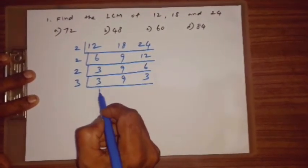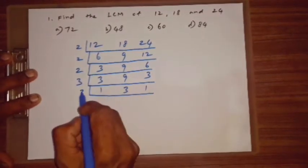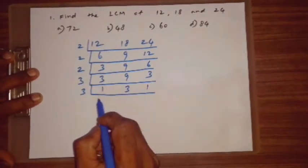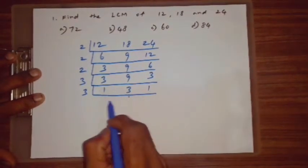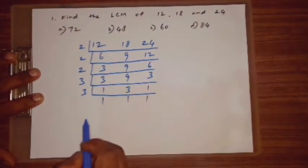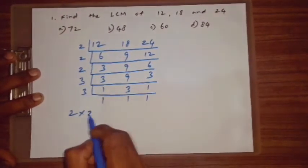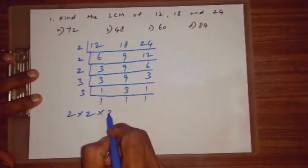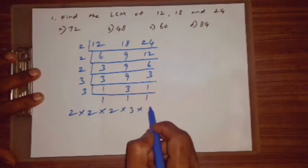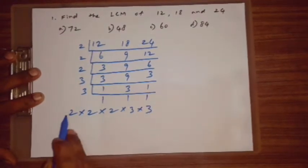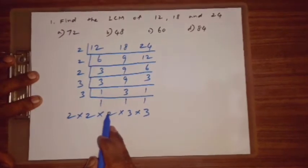After dividing by 3: get 1, 3, 1. Again divide by 3: get 1, 1, 1. So the answer is 2 × 2 × 2 × 3 × 3. Two 2s are 4, 4 twos are 8, 8 twos are 24.